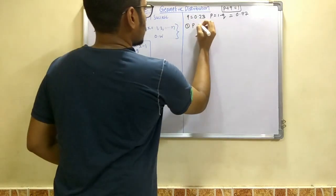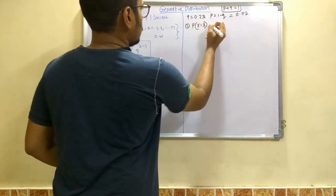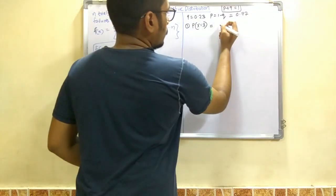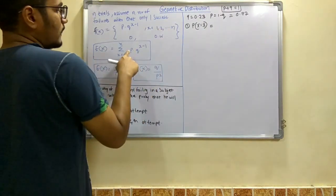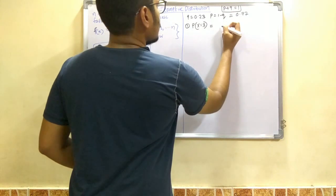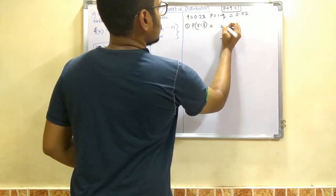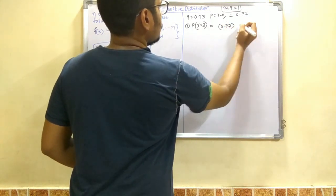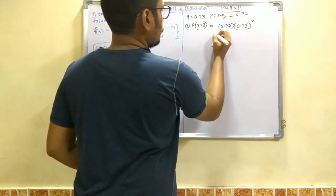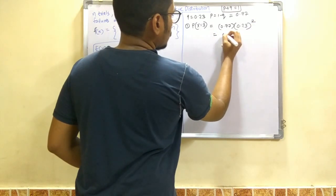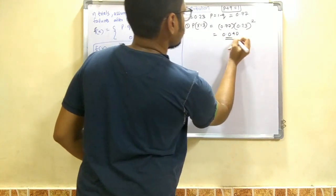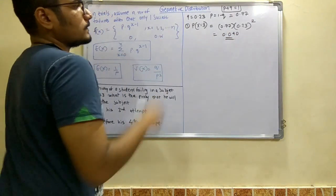So we can solve the very first condition, that is probability of x equals 3. That is the student will pass in exactly the third attempt. So the formula goes like this: p into q raised to x minus 1. So it would be 0.77 into 0.23 raised to 3 minus 1, that is 2. And so the answer comes out to be 0.040. So this is the first value. That is on the third attempt he will pass with a probability of 0.040.